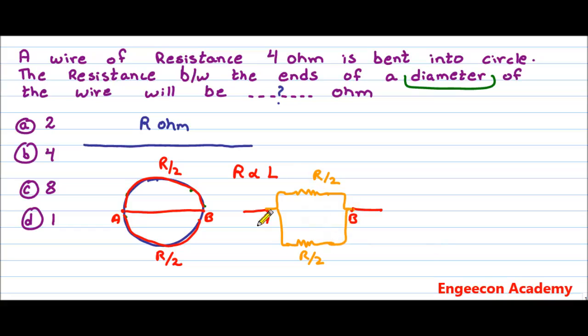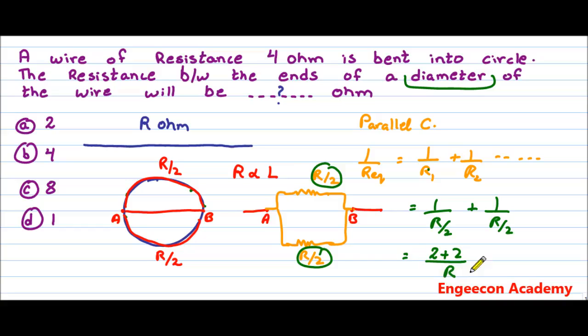So both the resistances are in parallel combination. The equivalent resistance can be calculated as 1 over R equivalent equals 1 over R1 plus 1 over R2. In this case, R1 equals R divided by 2 and R2 equals R divided by 2. So 1 over R/2 plus 1 over R/2, which can be simplified as 2 plus 2 divided by R, which is 4 divided by R.